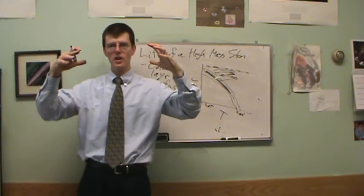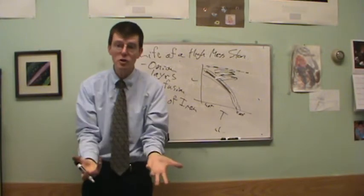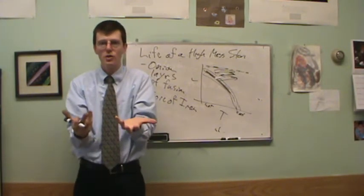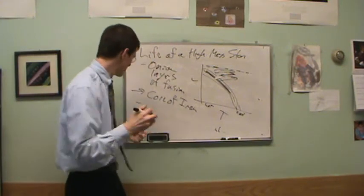And so now all this electron degeneracy pressure is suddenly gone and the core can collapse inward. There's no more nuclear fusion in the core. You can't do any nuclear fusion with iron. So you can't generate any more heat pressure to hold up the core. So the core collapses inward.